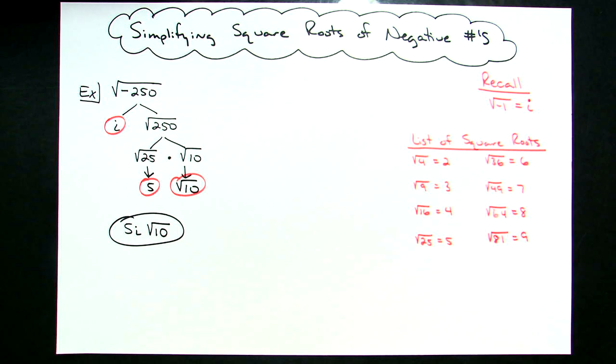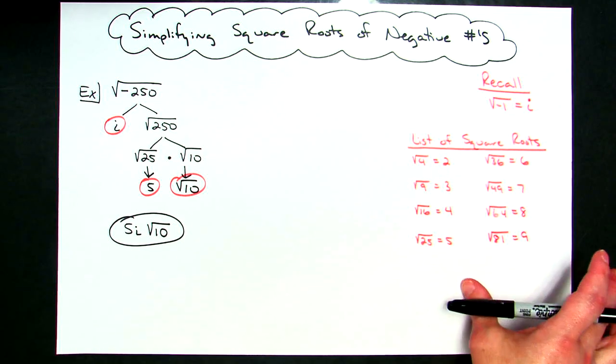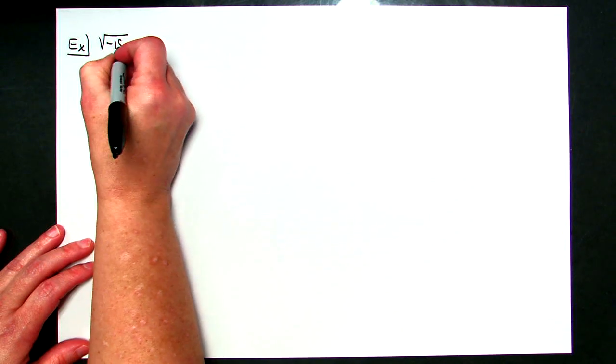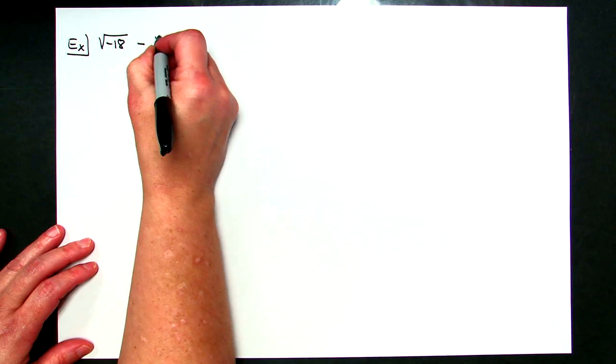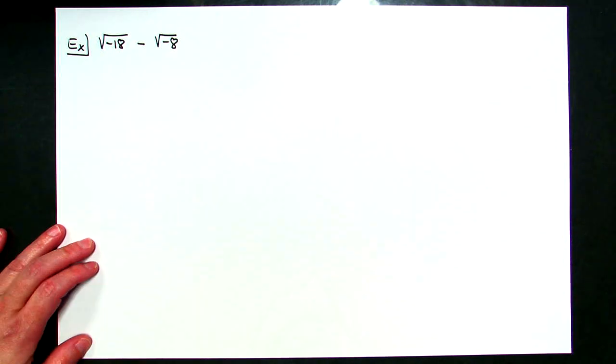Now let's do another example. That was a straightforward simplification with a negative underneath. We can add a little more complexity by adding or subtracting square roots. Let's look at something like square root of negative 18 minus square root of negative 8 — a subtraction example.